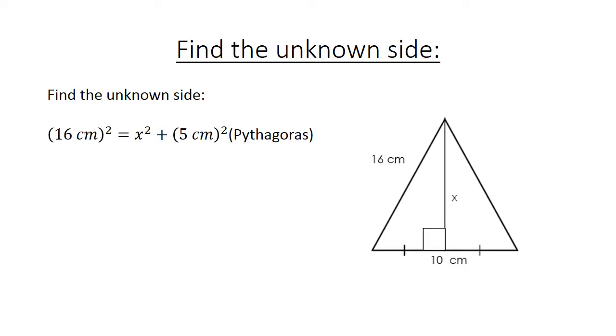Find the unknown side. 16 cm squared equals x squared plus 5 cm squared. And our reason is Pythagoras.